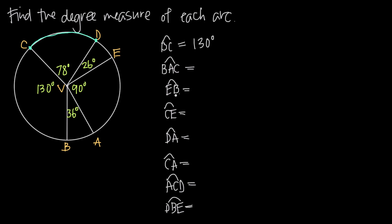What about arc BAC? When we have an arc with just two letters, like arc BC, it's going to be a minor arc — an arc less than 180 degrees. When we write an arc with three letters like arc BAC, we know it's going to be a major arc with a degree measure greater than 180 degrees. That tells you which way to go around the circle. Arc BC with two letters is a minor arc, so we go the shorter way. Arc BAC is a major arc, meaning we go starting at B, toward A, and then around to C.